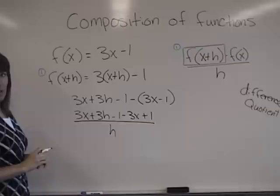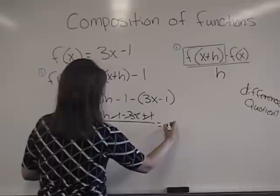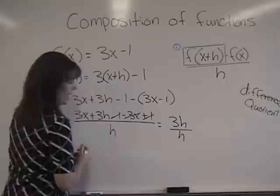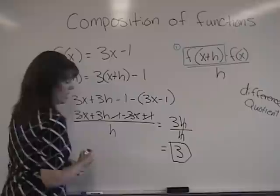Okay, so now we've done all the calculating. I have a positive 3x and a negative 3x. It cancels. I have a negative 1 and a positive 1. That cancels. So now I am left with 3h over h. Your h's go to 1. And so our answer is 3.